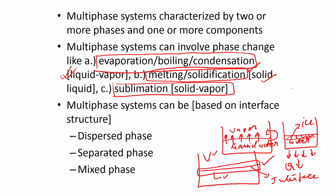If you take a droplet and place it on a surface — like when you spill something — you have a liquid, a solid surface, and a vapour. This is a typical example where the interface, especially at that particular sector, is a solid-liquid-vapour phase contact line. This is basically called a three-phase structure.